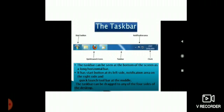Now, what is a taskbar? The taskbar can be seen at the bottom of the screen as a long horizontal bar. It has the Start button on its left side, the Notification area on the right side, and the Quick Launch toolbar in the middle. The taskbar can be dragged to any of the four sides of the desktop.